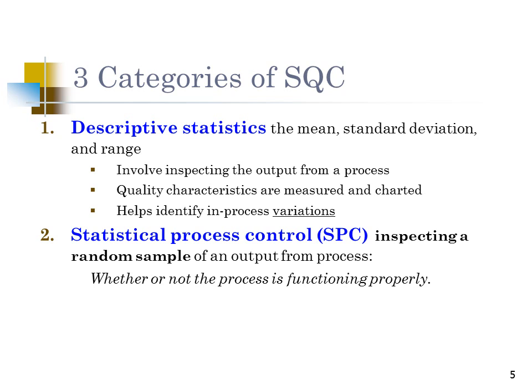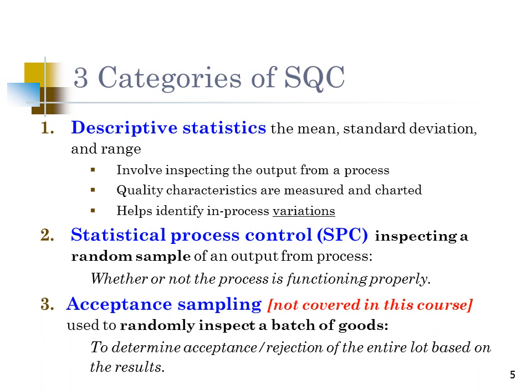The second category, which is our focus in this chapter, is Statistical Process Control (SPC). We inspect random samples of the output to determine whether the process is functioning properly. The third topic, acceptance sampling, can be found in the textbook but is not covered in this course.